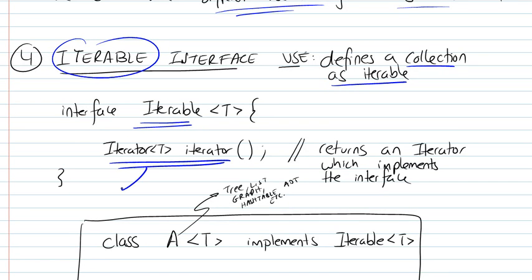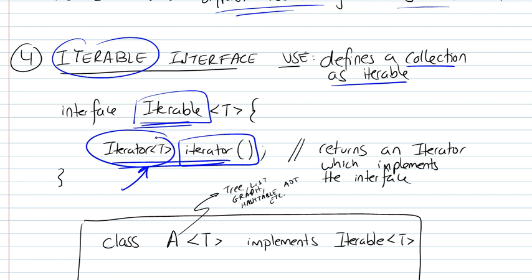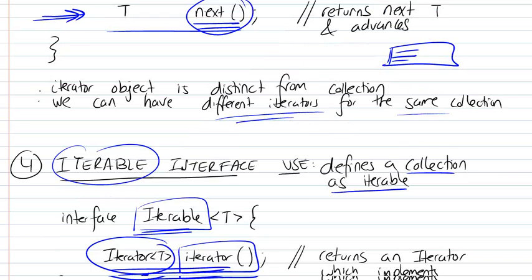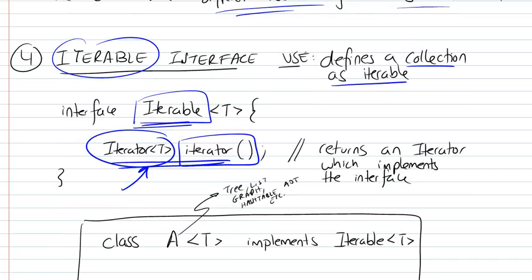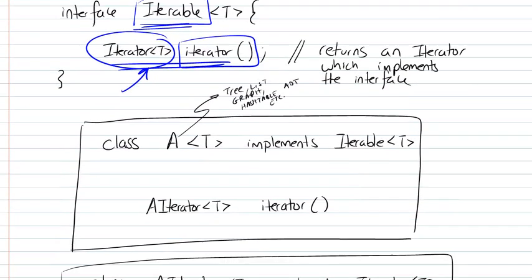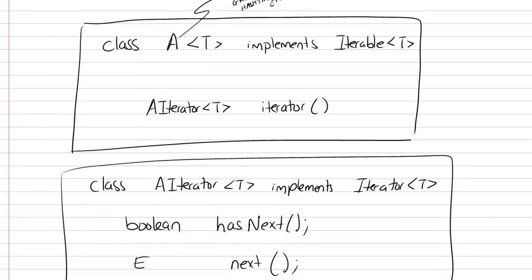The only function that needs to be implemented for the iterable interface is the iterator function, and all it does is return an iterator object. The iterator object is an object whose class actually implements the iterator interface. It takes a little time to get used to this terminology, but you'll get used to it.